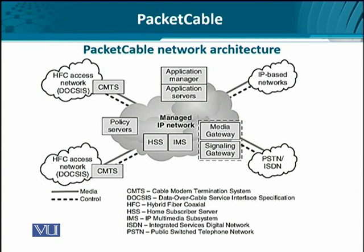We also have the Home Subscriber Server that acts like HLR and VLR, and then the IP Multimedia Subsystem, which allows the transfer of multiple types of multimedia traffic on any network. In fact, the IP Multimedia Subsystem, Home Subscriber Server, application manager, and application servers are not exactly part of cable network architecture — these would be present in any network that is going to talk to legacy PSTNs, PLMNs, ISDN networks, and the internet. So if every network needs that, so does the Packet Cable network architecture as well.